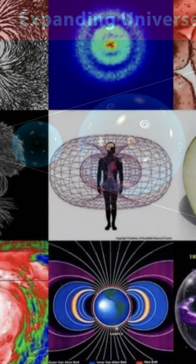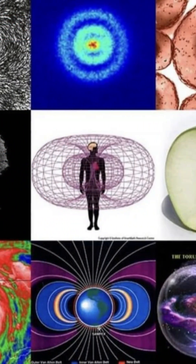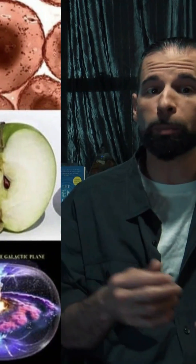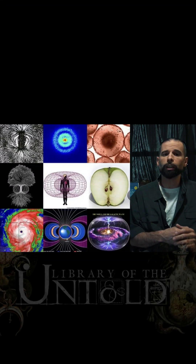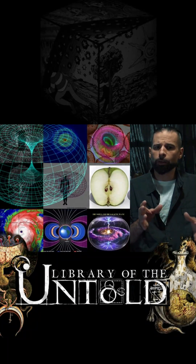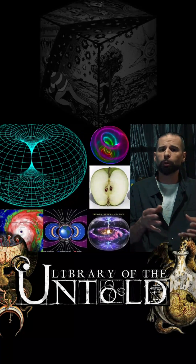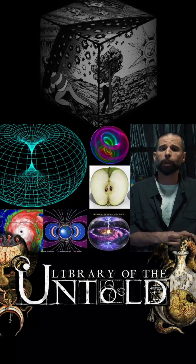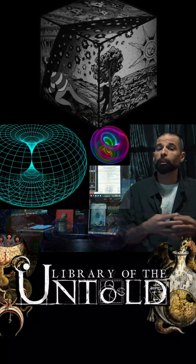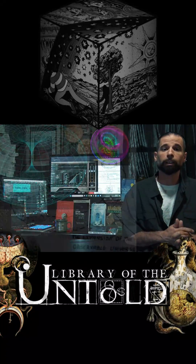If we look at the shape of an apple, an egg, or the magnetic field of a human body, we see a commonality — the torus shape. It answers more than just a few questions, including why the expansion of the universe is accelerating.